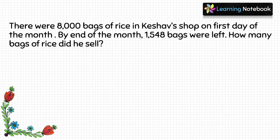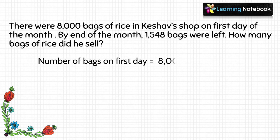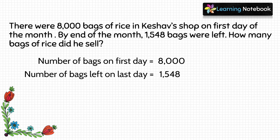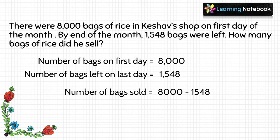This is a case of subtraction. Let's write the statements: number of bags on the first day = 8000, number of bags left on the last day = 1548. So number of bags sold = 8000 minus 1548.